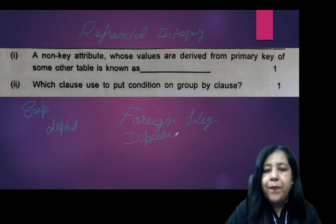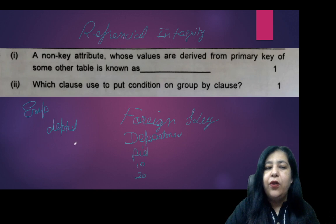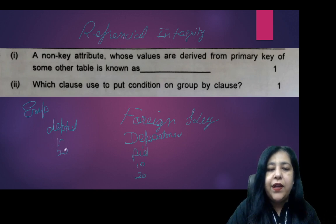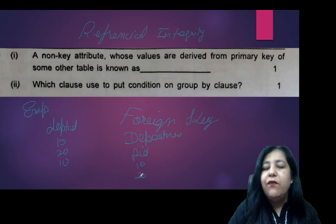Now there will be values from it. If I have department only 10 or 20, so I can take all these here. I cannot take 40 or 50 in this because they are not here.